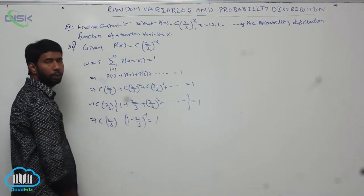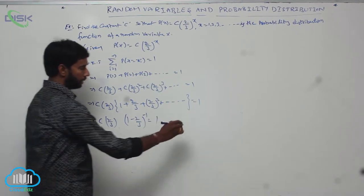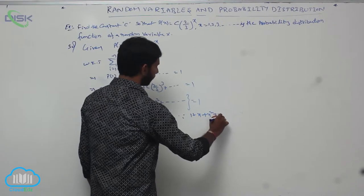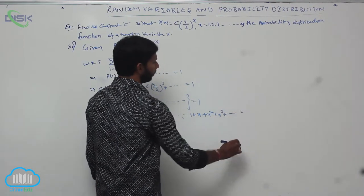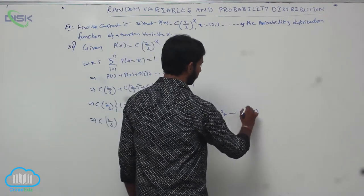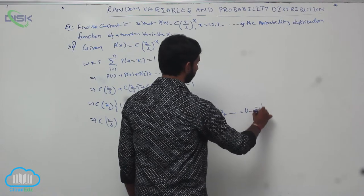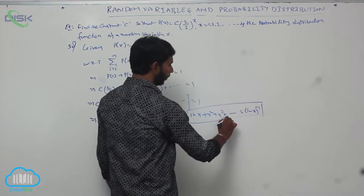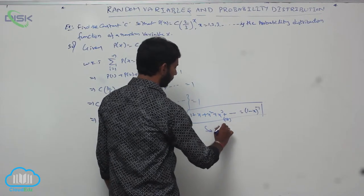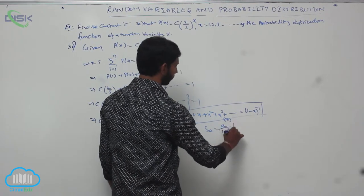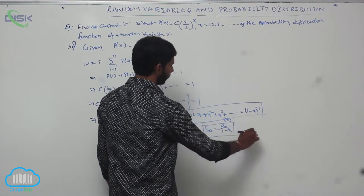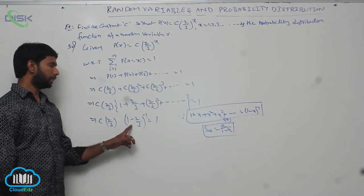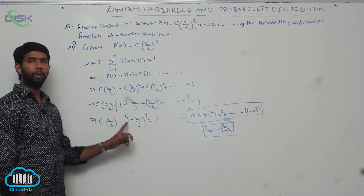Since 1 plus X plus X^2 plus X^3 plus and so on equals (1 minus X)^(-1), by using this formula — or equivalently, the sum of infinite terms of a GP is equal to A divided by (1 minus R) — these formulas apply to this expansion. So the series becomes (1 minus 2/3)^(-1).